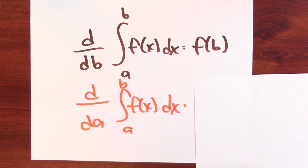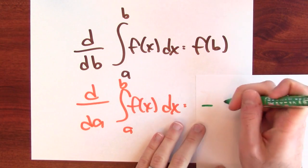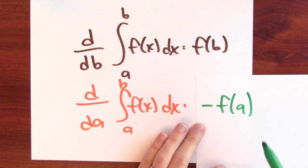So I can summarize this. The derivative with respect to a of the integral from a to b of f of x dx is negative f of a.